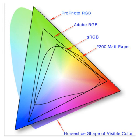Adding a specific mapping function between a color model and a reference color space establishes within the reference color space a definite footprint, known as a gamut, and for a given color model this defines a color space.